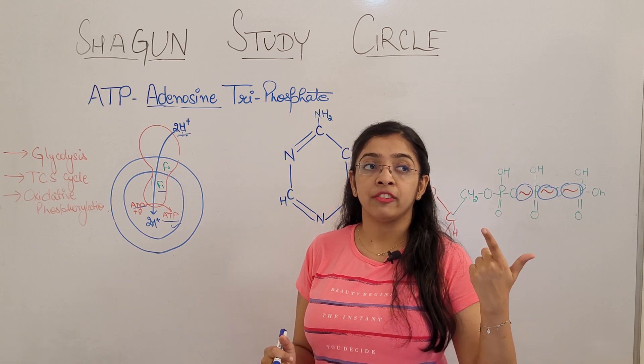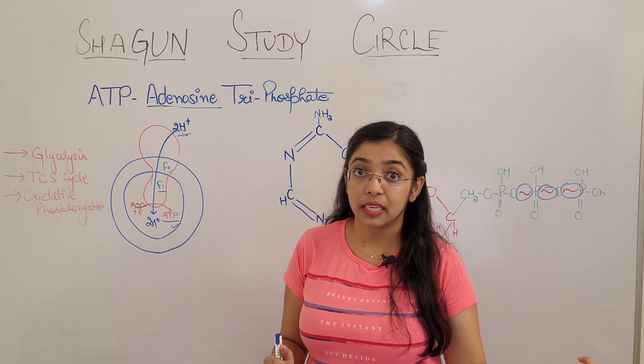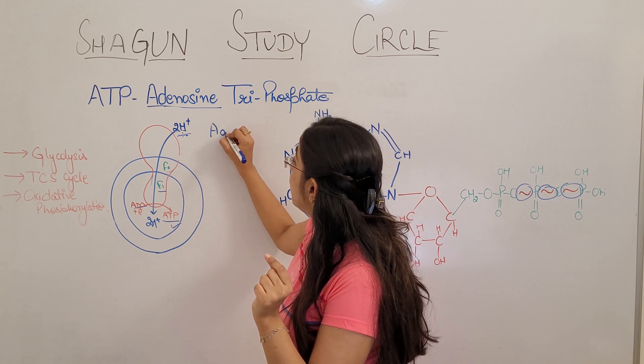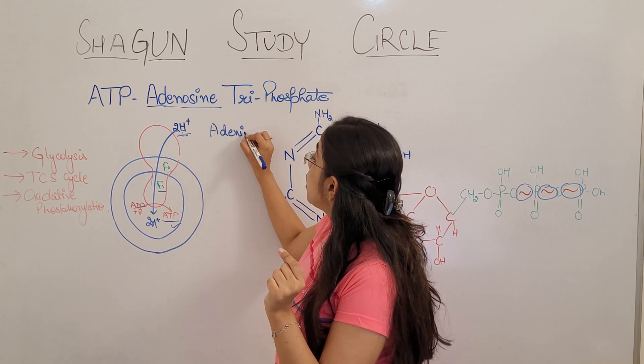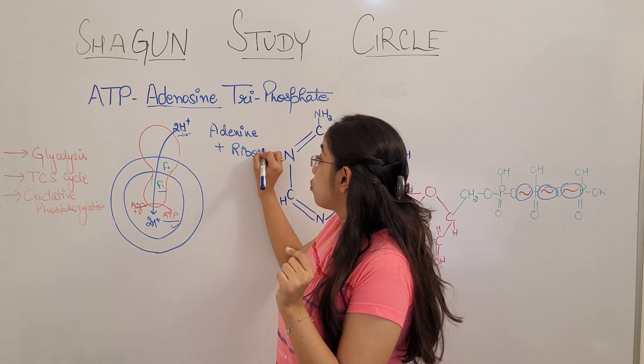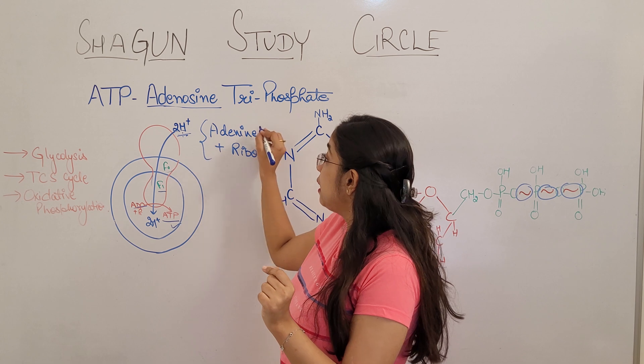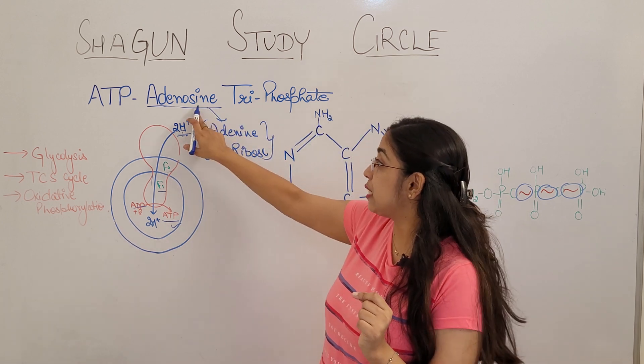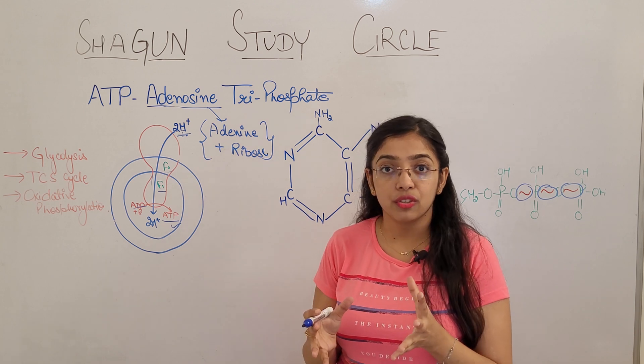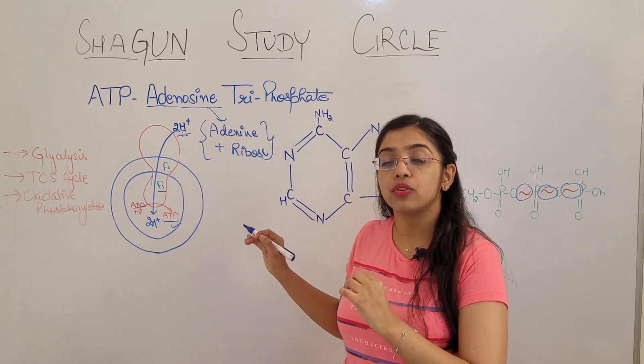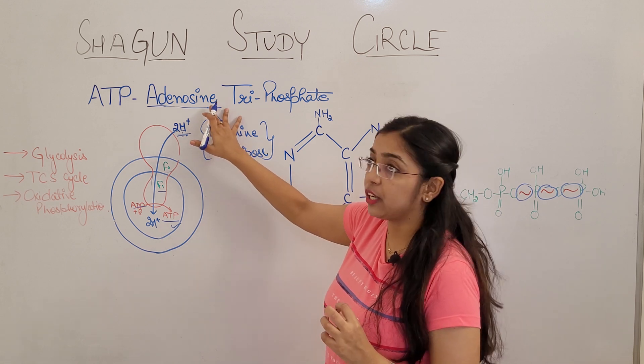We all know we have studied the structure of DNA, RNA. We know adenine. Adenine when it combines with ribose sugar, they form the adenosine. Adenosine is the composition of when adenine joins with ribose sugar.